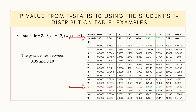In the t-distribution table, first select a row for the degrees of freedom value of 12. Then select the cells within which the absolute value of the t-statistic, which is 2.13, lies. Now select the column values associated with these two cells, which provide the range of the p-value.